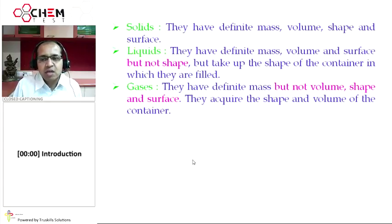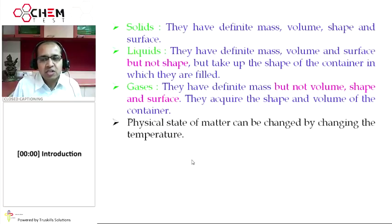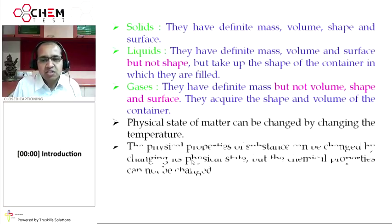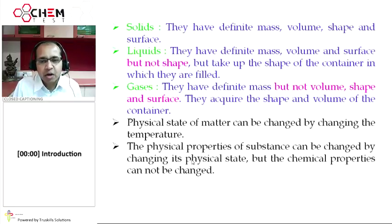This type of physical state of matter can be changed by changing the temperature. Physical properties of the substance can be changed by changing the physical state, but chemical properties cannot be changed. For example, in H2O liquid, ice, or water vapor, whatever chemical reactions are there, those chemical reactions of water remain the same, whether it is in liquid state, solid state, or water vapor state.